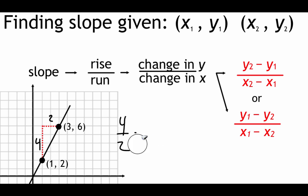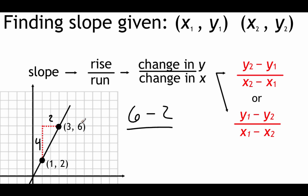I'm going to run through finding the slope on this example using these formulas, not by looking at the picture. Given the ordered pairs 1, 2 and 3, 6 — finding the rise, or the change in the y value, I'm going to start with 3, 6 and subtract the y values. So 6 is our y value on top, 2 is our y value on bottom. Since I started with the 6 from that point, I have to start with the 3 for my x values and then subtract 1. So across the top 6 minus 2 is 4, and 3 minus 1 across the bottom is 2. Our rise was 4, our run was 2, and this simplifies down to just 2.